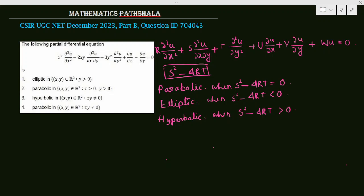Now let's check for the given problem — what is S² - 4RT? Here S is the coefficient of ∂²u/∂x∂y, which is -2xy, so S = -2xy. R is the coefficient of ∂²u/∂x², which is x², so R = x². And T is the coefficient of ∂²u/∂y², which is -3y², so T = -3y².